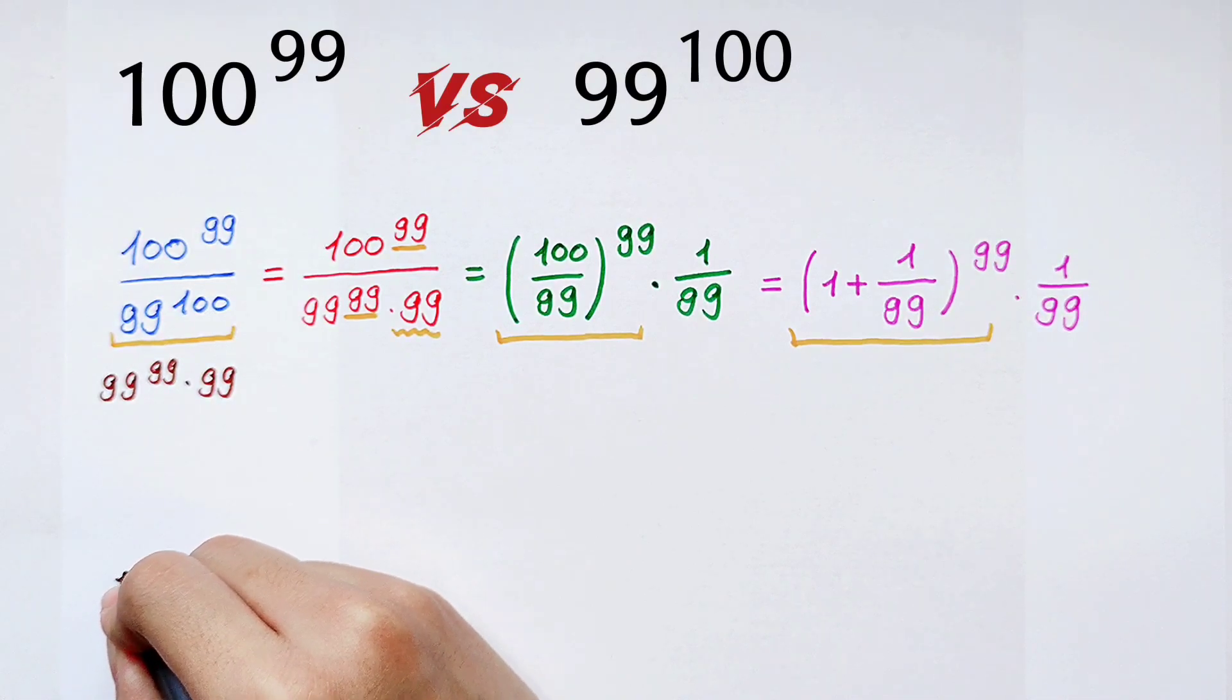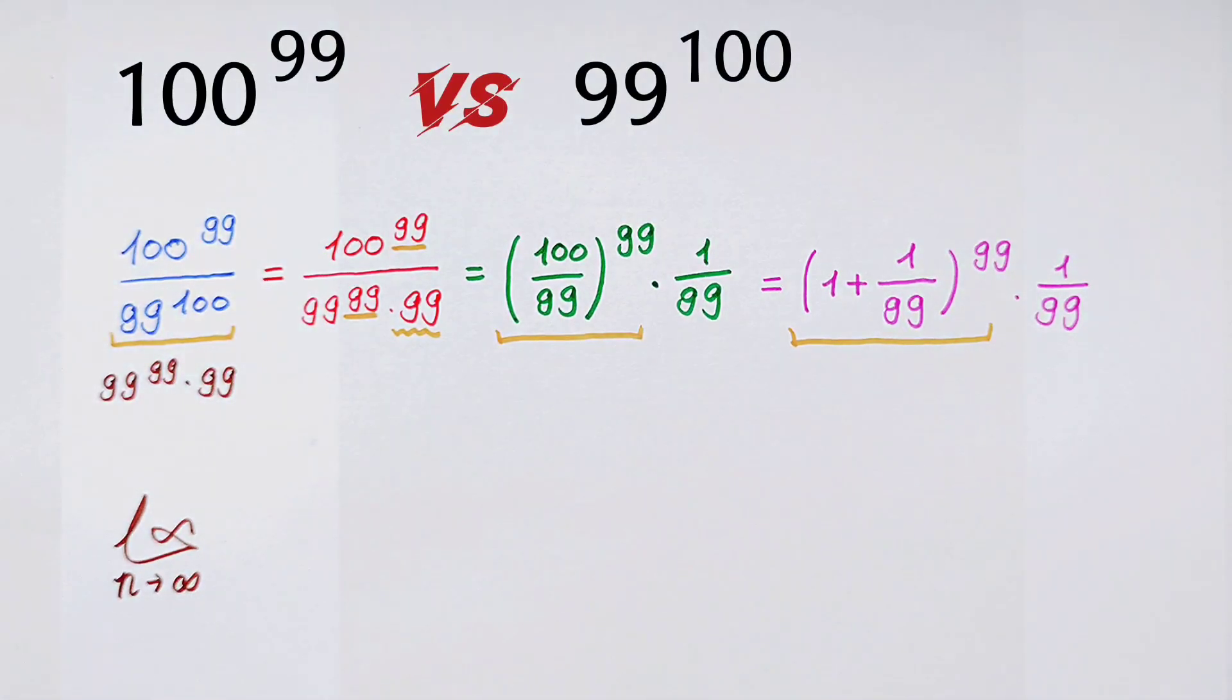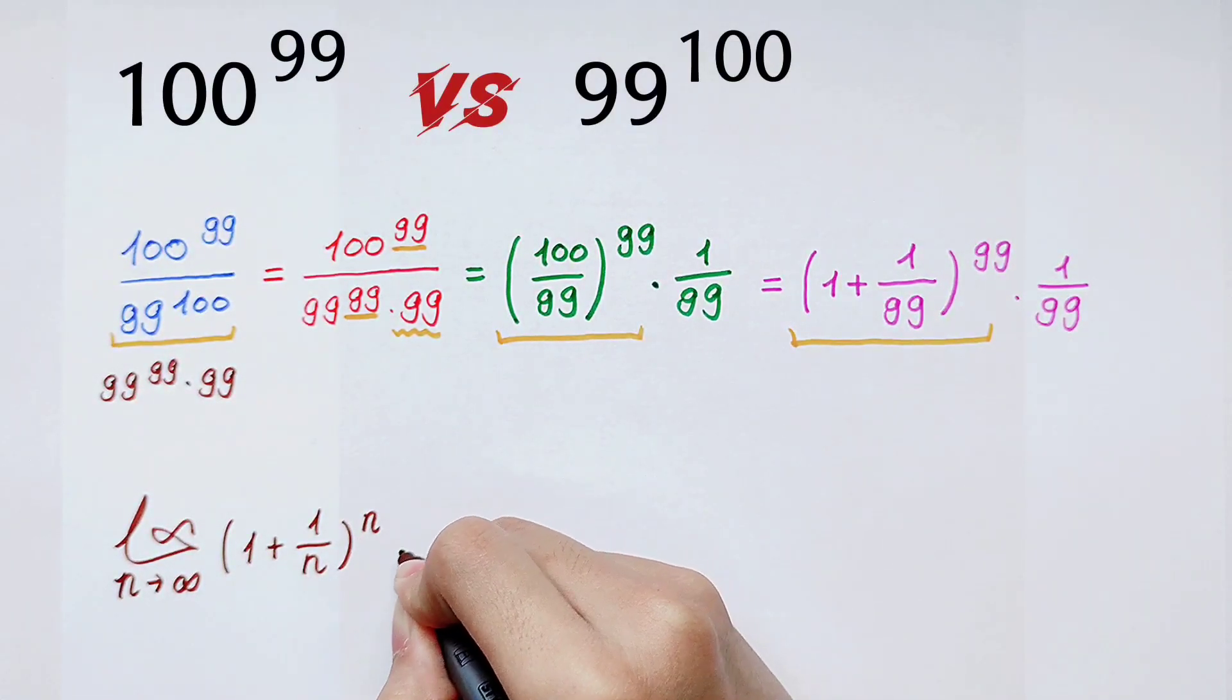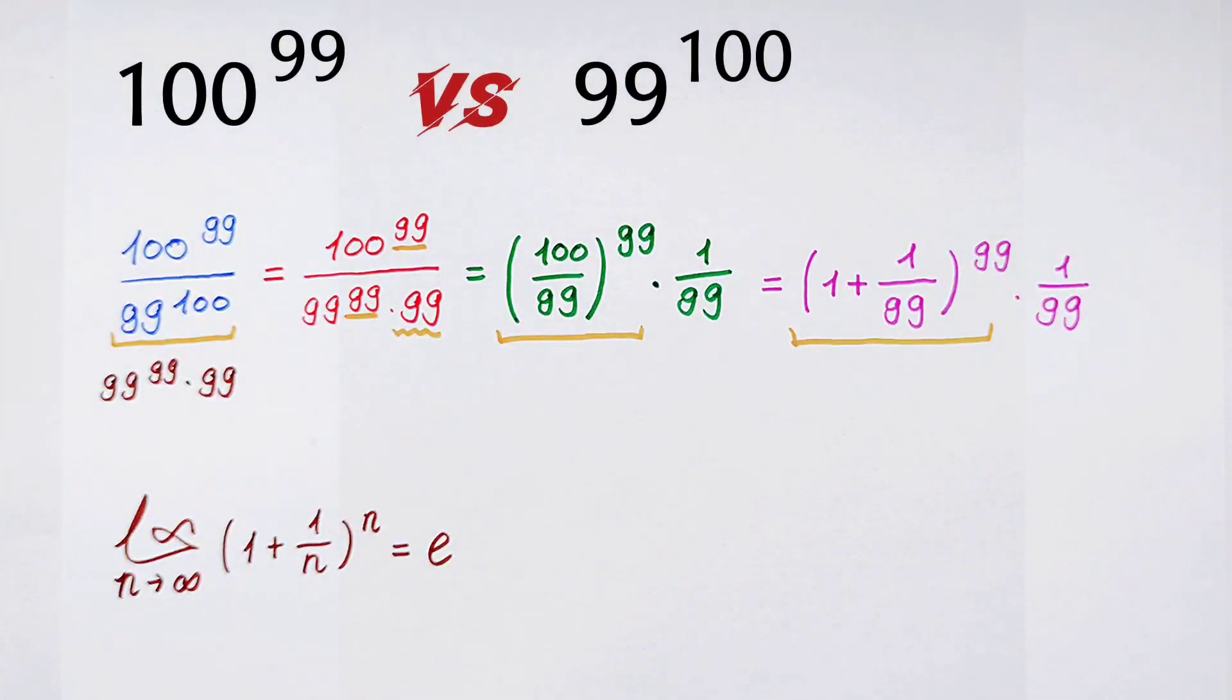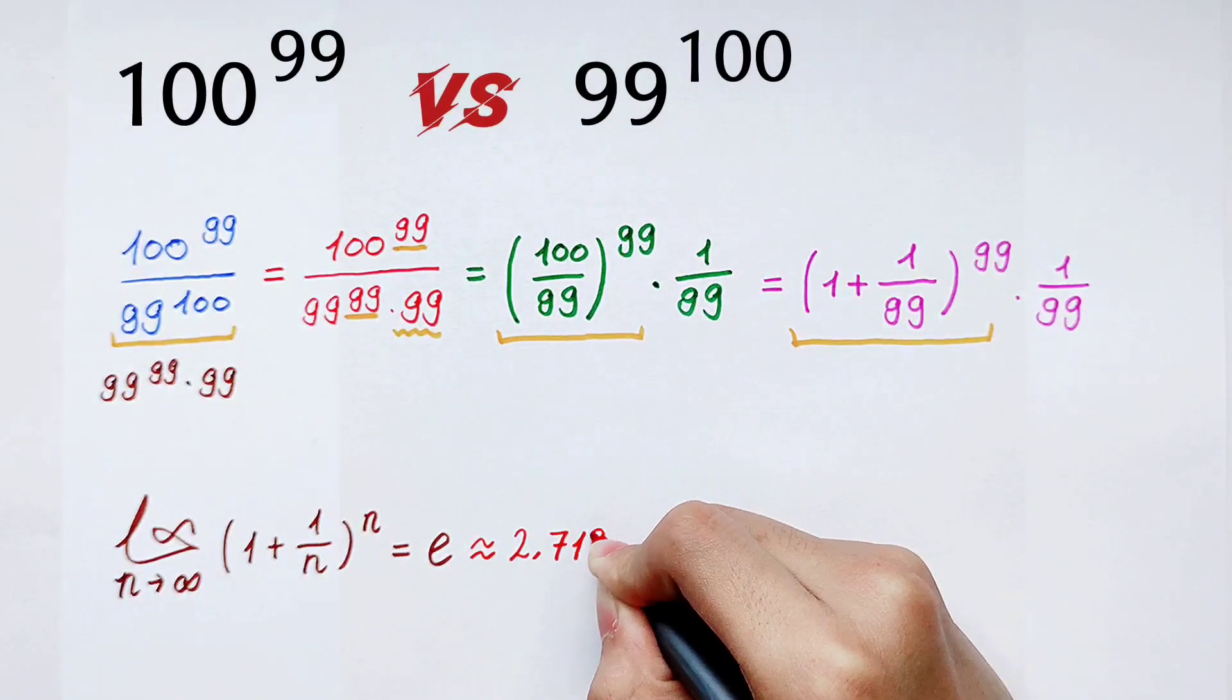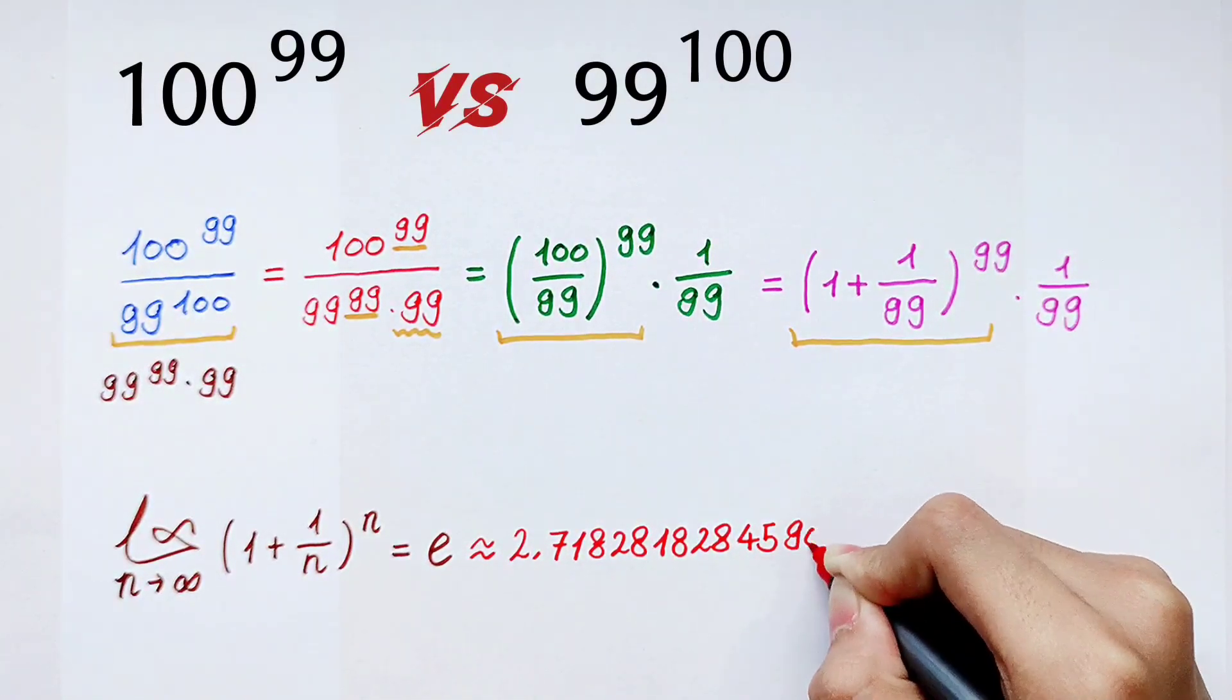That is, when n tends to infinity, the limit of (1 + 1/n)^n is equal to e. It's approximately equal to 2.718281828... and 459045.